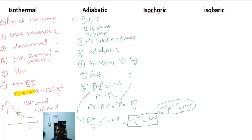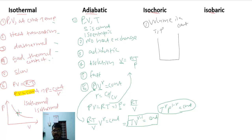Now, the isochoric process is a process in which volume remains constant, while temperature and pressure can change. Consider a cylinder fitted with a piston containing some gas. When heat is applied, temperature inside increases, and pressure also starts to increase.